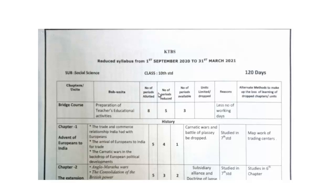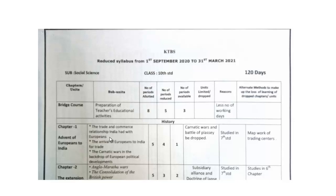Hello everyone. This video is very important for all students and teachers who are confused about what to study and what to teach in Social Science for Class 10 for the year 2020 to 2021. In this video, I am going to discuss the chapter-wise deleted topics for this academic year. This copy has been released by the Karnataka Board and will be applied from 1st September to 31st March 2021. We need to mark the topics very clearly so you don't get confused about what to read and what not to read.